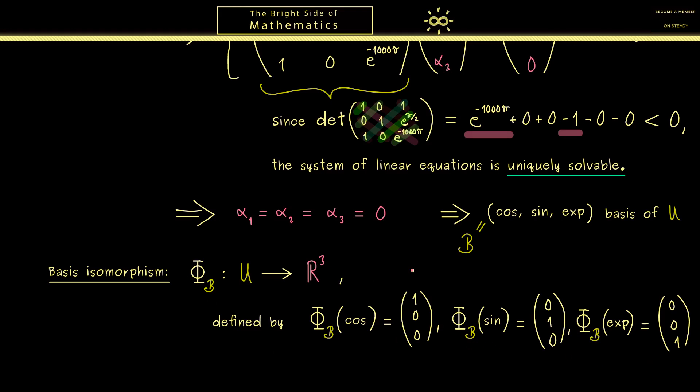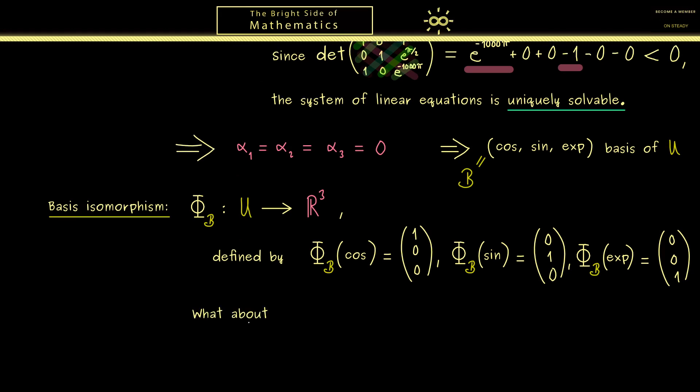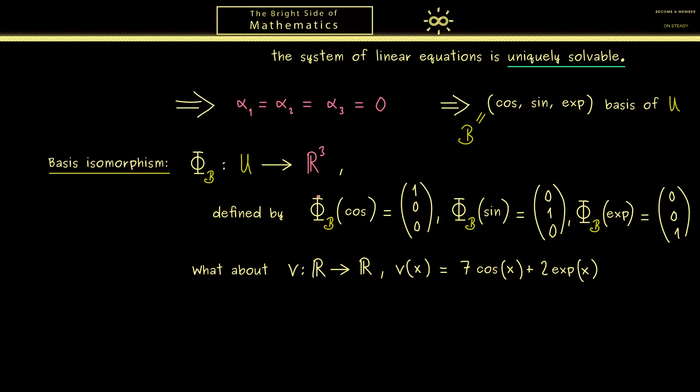And now we might ask, what happens if we take any vector in our space U? So for example, we could ask, what about a function V given from R to R? By the definition, V(x) is equal to 7cos(x) plus 2exp(x). So this is definitely an element of U, so we can map it to R³. And indeed this is easy to read, because you just have to take the coefficients here. Namely, we have (7, 0, 2).